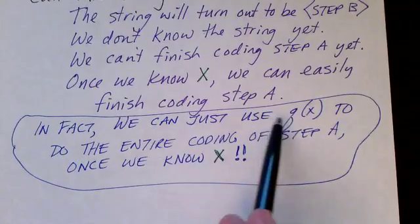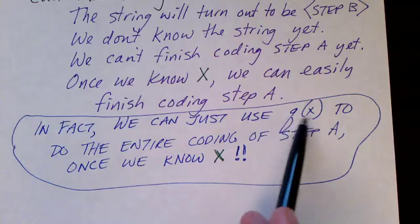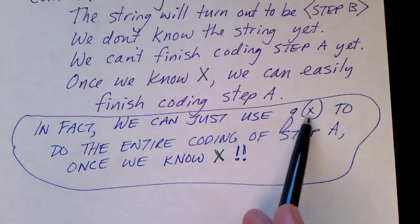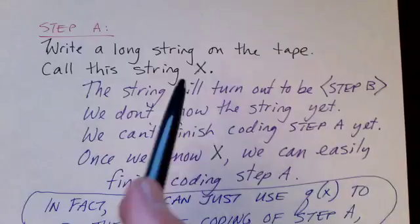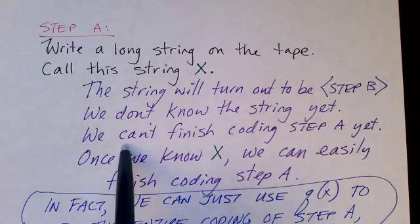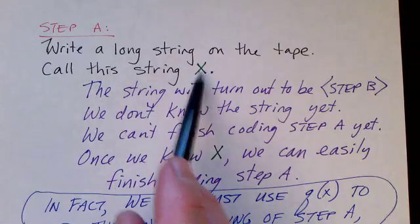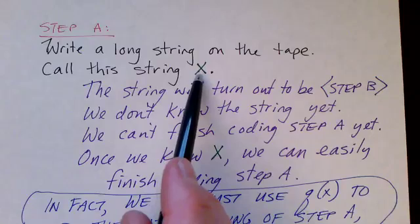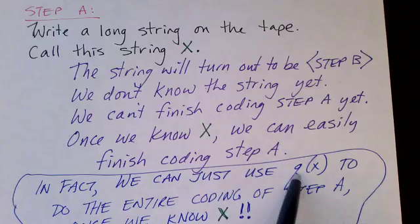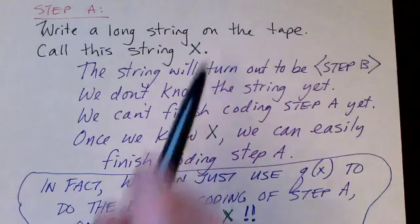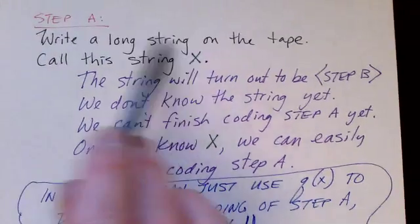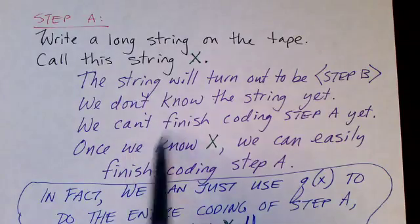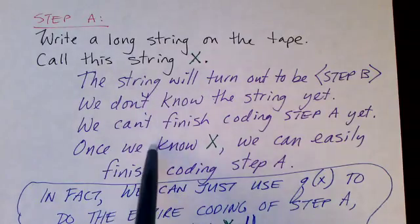Once we know X, we can easily create step A. We have the function Q that, given a string, will create the description of a machine to write out that string. So Q will do the work of creating step A. Once we know what X is, we can just apply Q, and Q will produce a representation of step A — it will code step A for us.